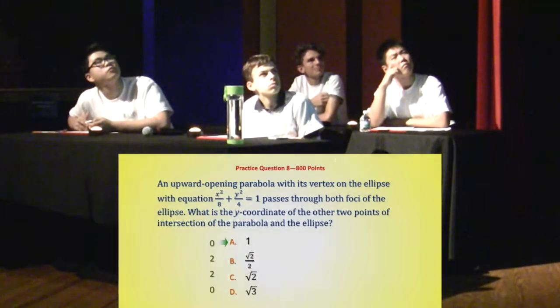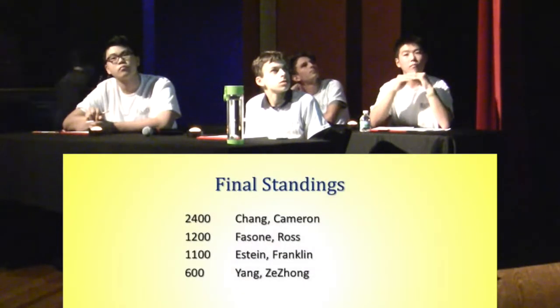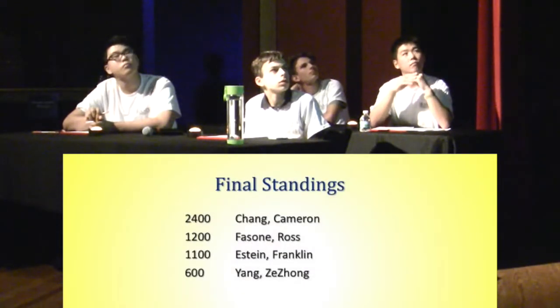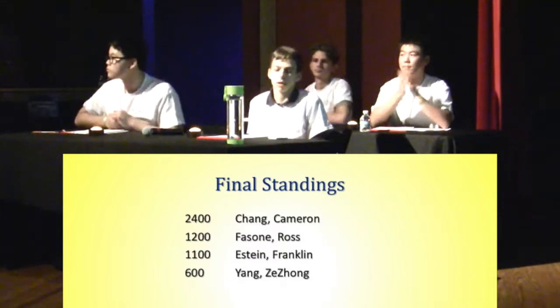I think it turns out to be A. Yes, it is A. Cameron stays in first place with 2,400. Ross with 1,200. Franklin with 1,100. And Zay Zong with 600. How about a nice hand for him? Thank you. Thank you.